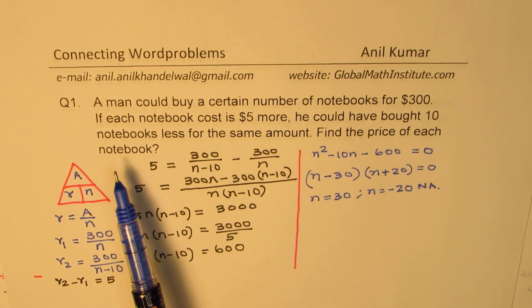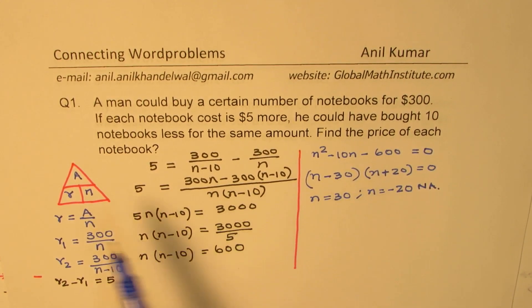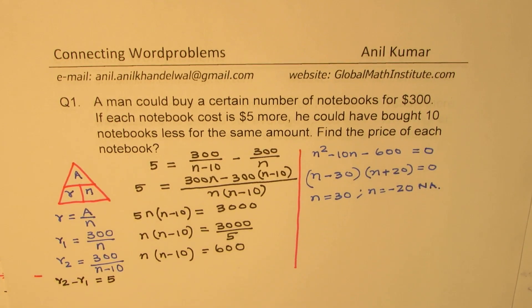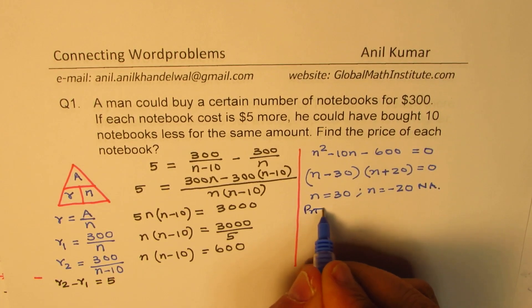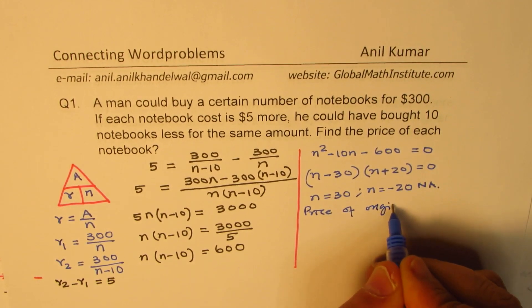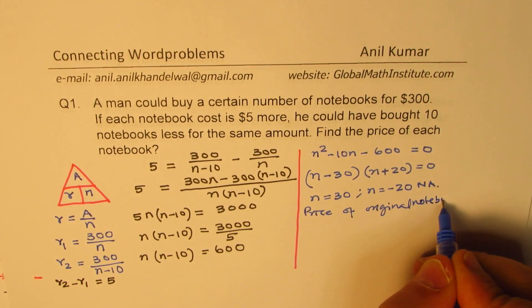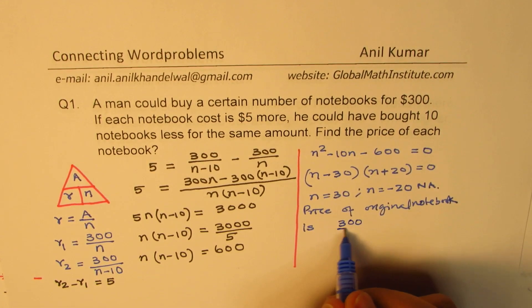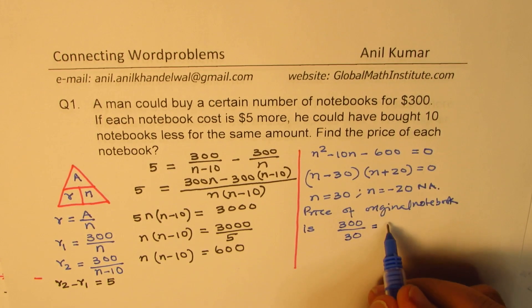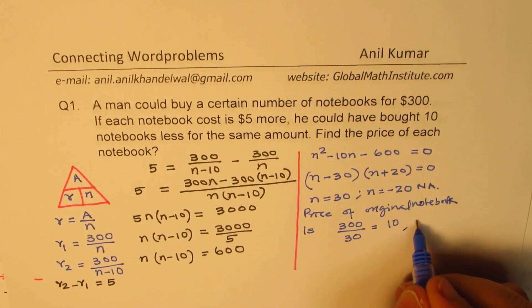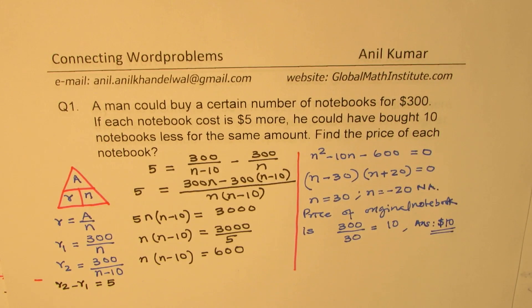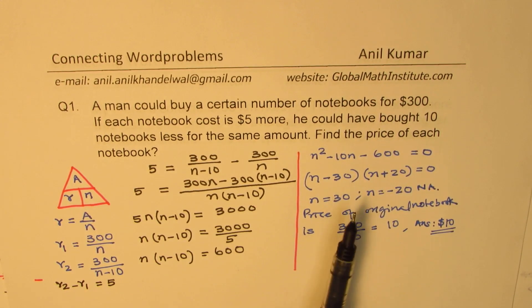We need to find the price of each notebook — the original rate. We know originally 30 notebooks were purchased, so the price is $300 divided by 30, which is $10. Our answer is $10 per notebook. I hope these steps are absolutely clear.